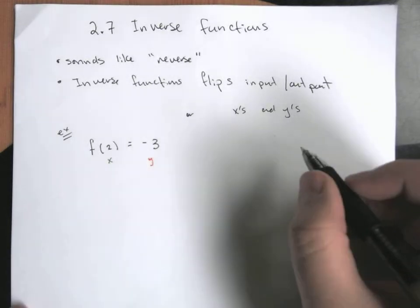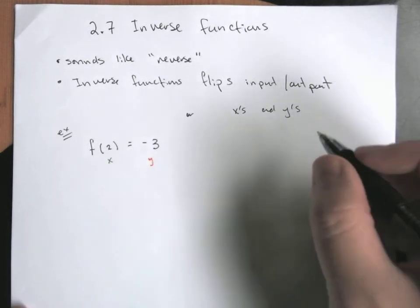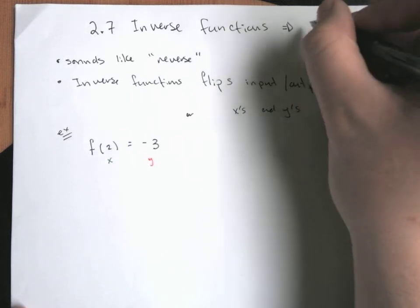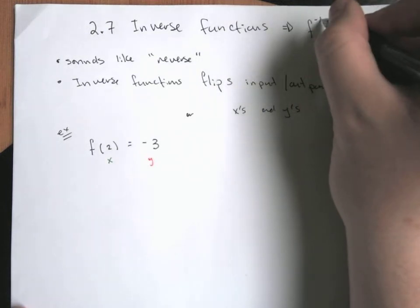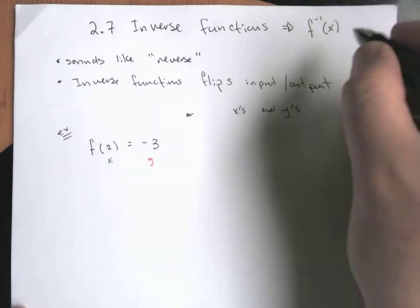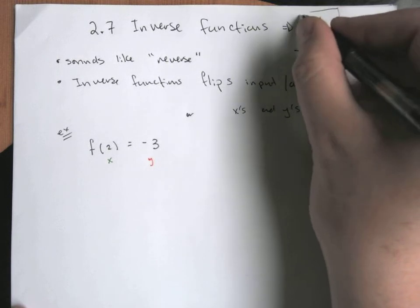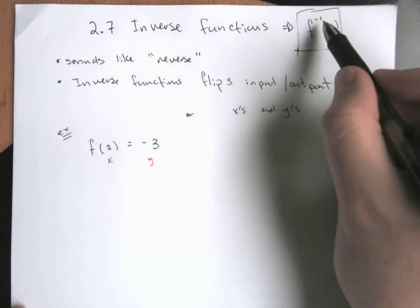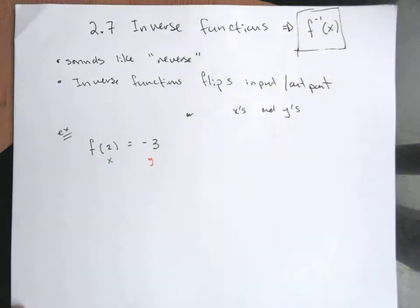Then my inverse function is going to be f with this little minus one, so it looks like it's f to the minus one.